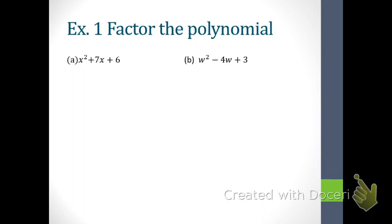The first thing you've got to recognize when it says 'factor the polynomial' — on a quiz or test — is what type of polynomial you're dealing with, because today we're working with trinomials that have a leading coefficient of 1. By the time you take a quiz or test, there will be all different types of polynomials mixed together. So for letter A, what type of polynomial do we have? A trinomial. And what is the leading coefficient? 1. So we go straight to drawing our X.